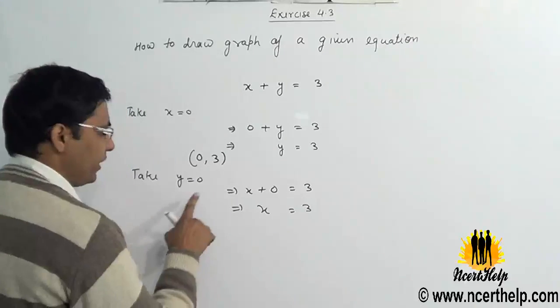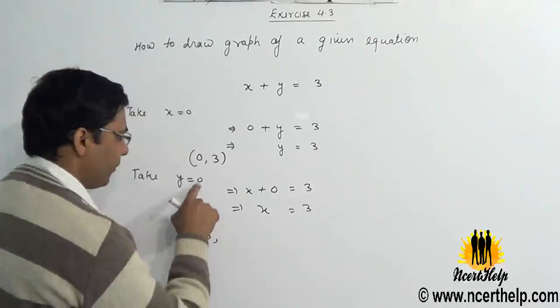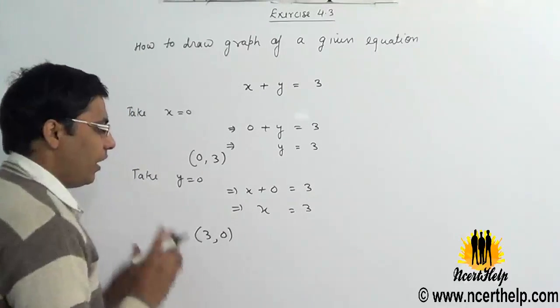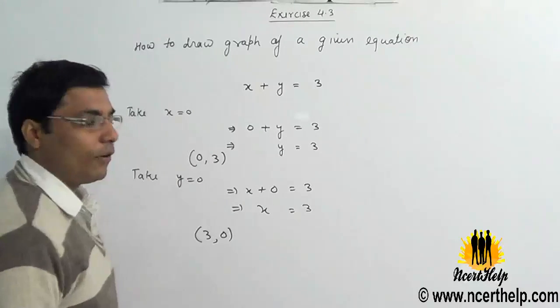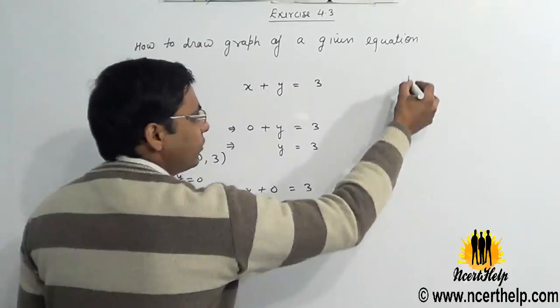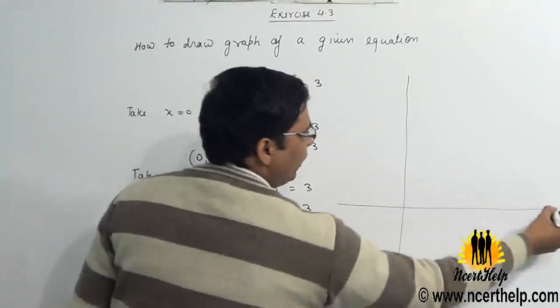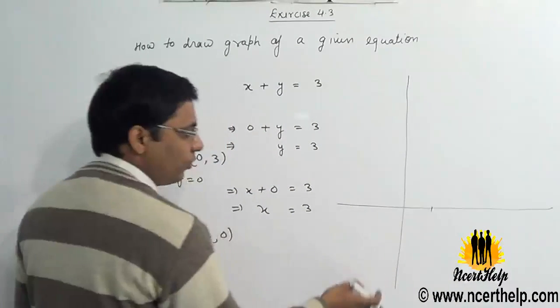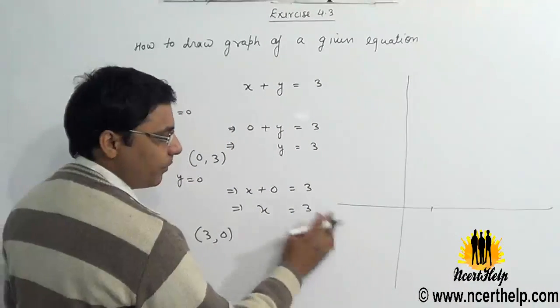So I have got two points. First point was x equals 0, y equals 3, and second point is x equals 3, y equals 0. Now I can draw the graph with help of these points. Both points are positive, so there is no need to write negative numbers here on this graph.